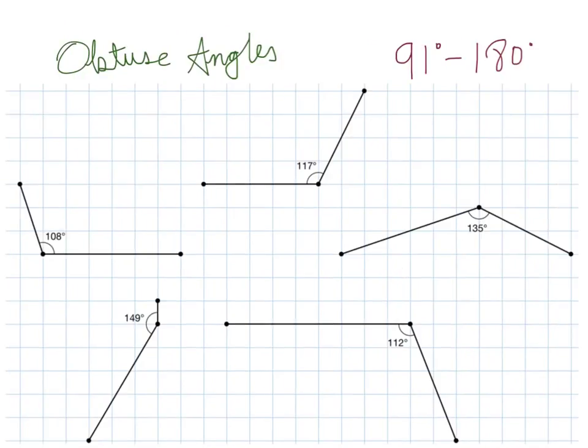The next set of angles are obtuse angles, and they range from 91 degrees to 180 degrees. Basically any angle that's larger than a right angle, but smaller than a horizontal line or half a circle. On this page, 108 degrees is the smallest, and 149 degrees is the largest.